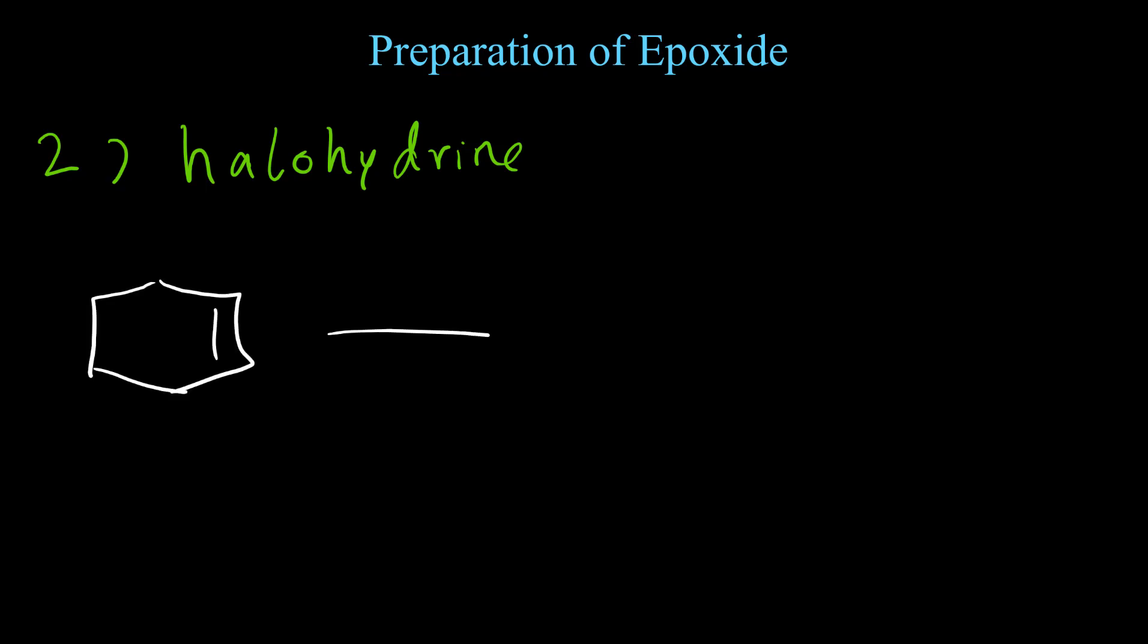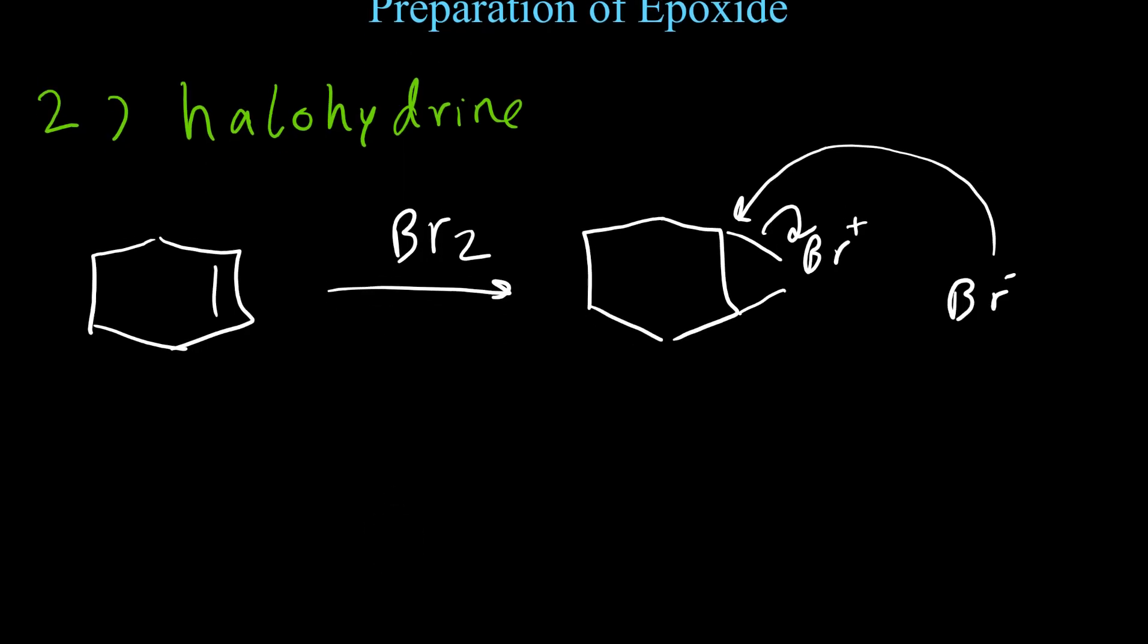The second method for preparation of epoxide is using halohydrin strategy. We know if we add bromine to a double bond first we have a bromonium intermediate, and then the negative bromide attacks from the back side and opens the ring.